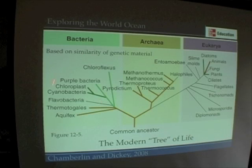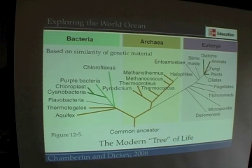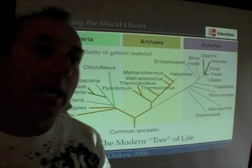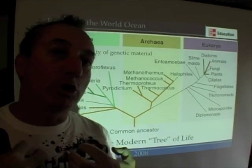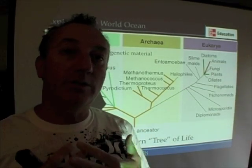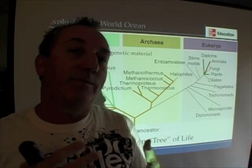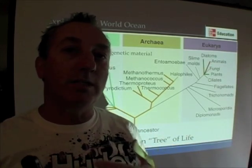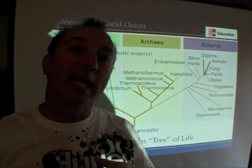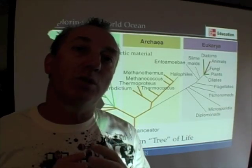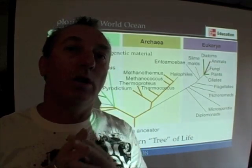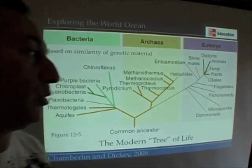The bacteria are united by a certain type of genetic code. We also find that bacteria have what we call a prokaryotic cell structure, meaning they lack the kinds of internal organelles that our cells have. Their internal organization is not as apparent, and bacteria also have a very unique cell wall compared to the other two groups.